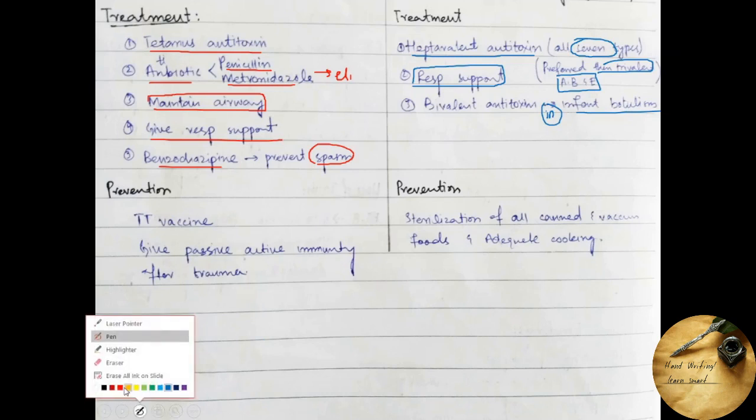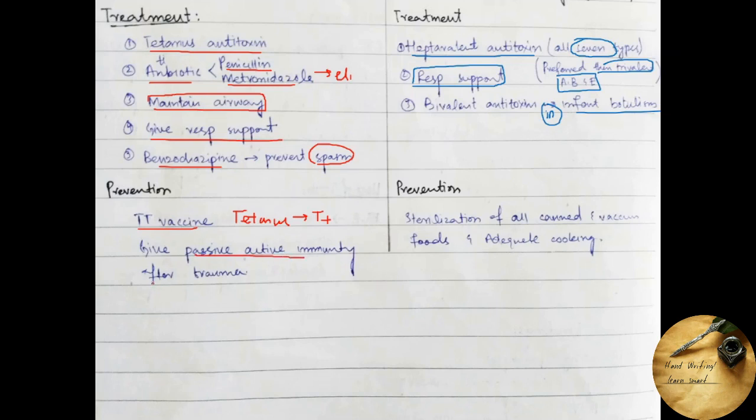How to prevent the disease caused by Clostridium tetani? We use tetanus toxoid vaccine which consists of inactivated tetanus toxin. We can also give passive immunity, i.e. tetanus antitoxin and tetanus toxoid vaccine for trauma.